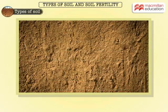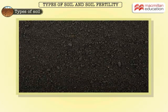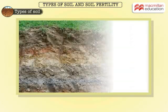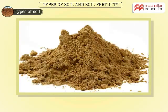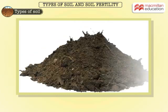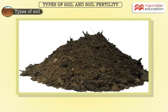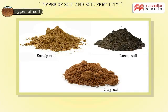We know that no two samples of soil are identical. The soil on earth's surface can be broadly classified into three types: sandy soil, clay soil, and loam, as seen here. Let's discuss the characteristics of each of these.